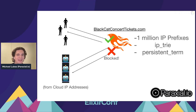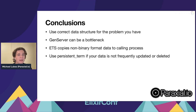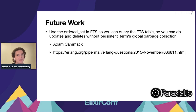So in the final implementation, we have 1 million IP prefixes in an IP trie stored in persistent term. Bots coming from cloud IP addresses get blocked at the route for purchasing concert tickets. As a bonus, login requests from cloud server IPs are almost certainly malicious. IP addresses are particularly valuable for bot detection because, unlike headers or TLS signatures, they cannot be spoofed.